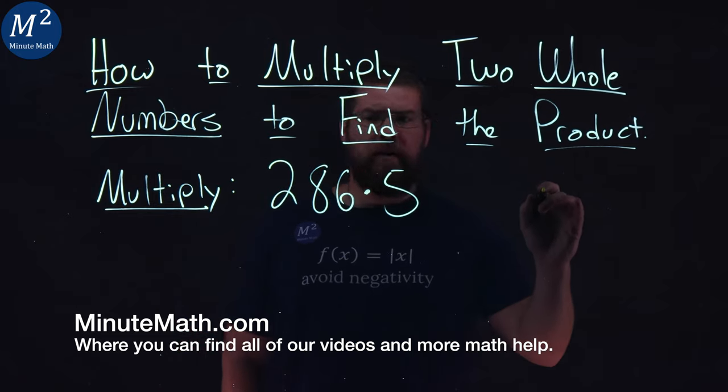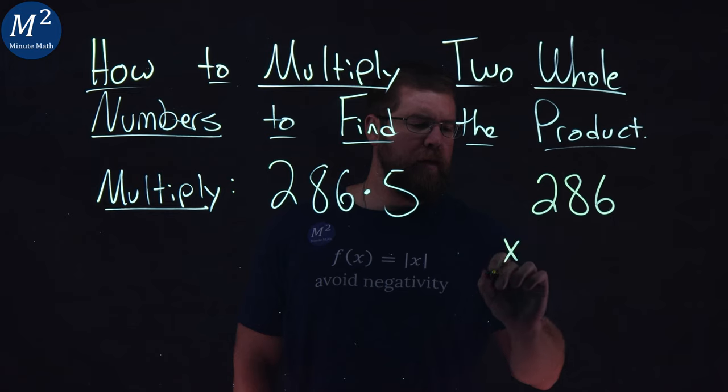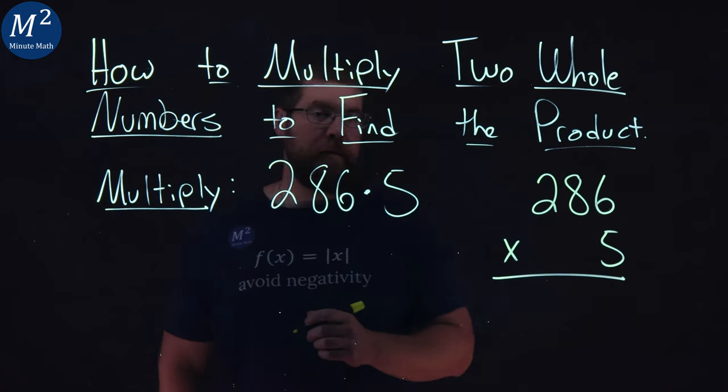To do that, the traditional method, I'm going to take 286 right here. I'm going to multiply that by 5, that just goes in the ones place.